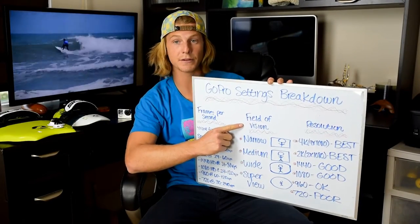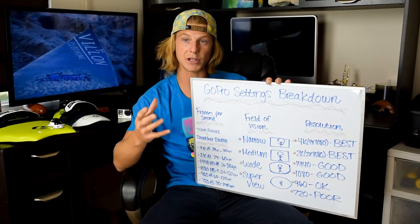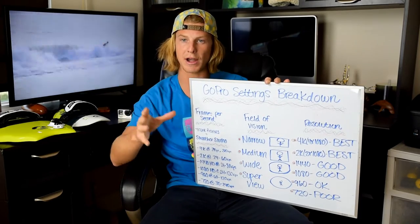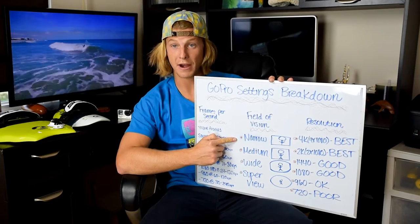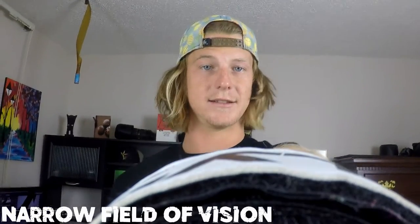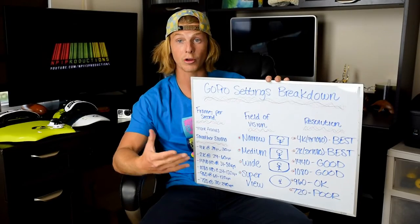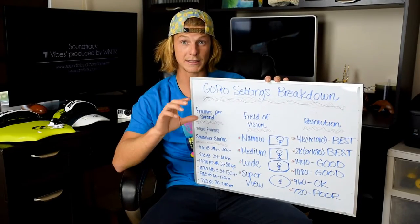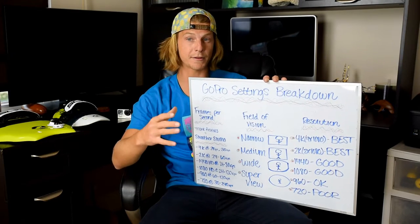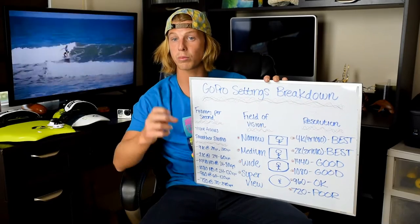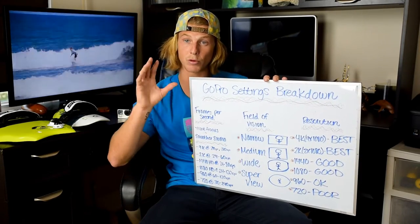Next is field of vision — this is what we're seeing. Imagine an eye and if you could adjust how wide or narrow it could see, that's what this setting adjusts. First, narrow: this is a very zoomed-in shot. I would compare it to about a 35mm lens on a crop sensor DSLR. It's very zoomed in and can be beneficial if you're shooting something further away, or if you just want to get rid of that GoPro fisheye wide angle look.